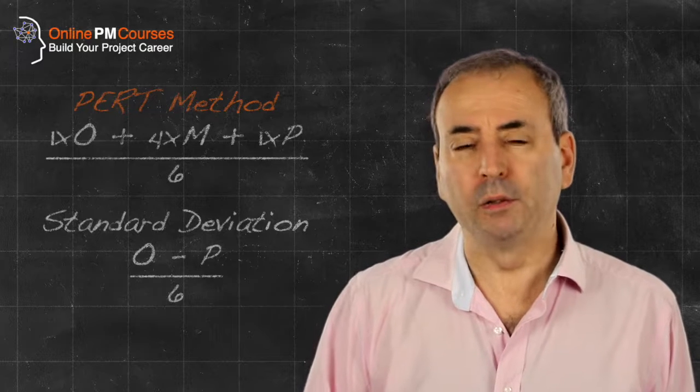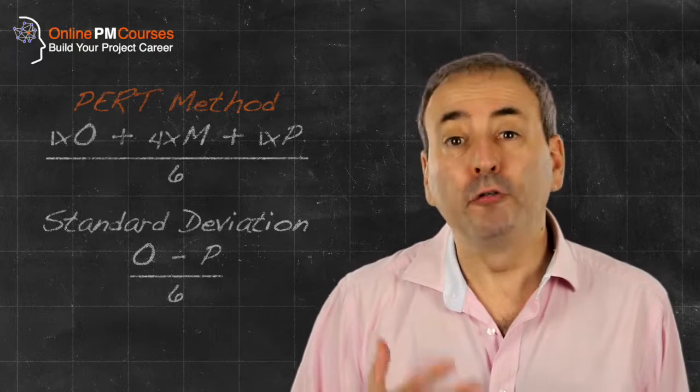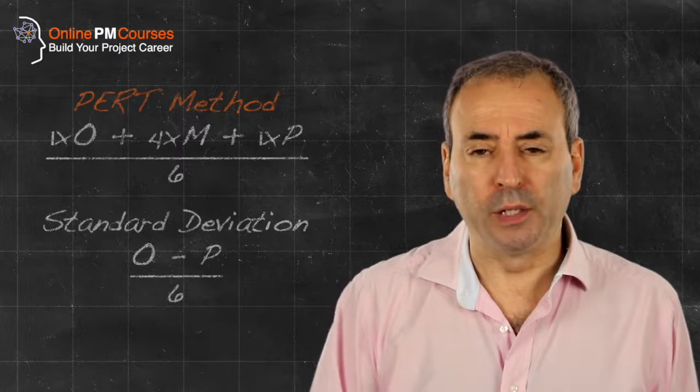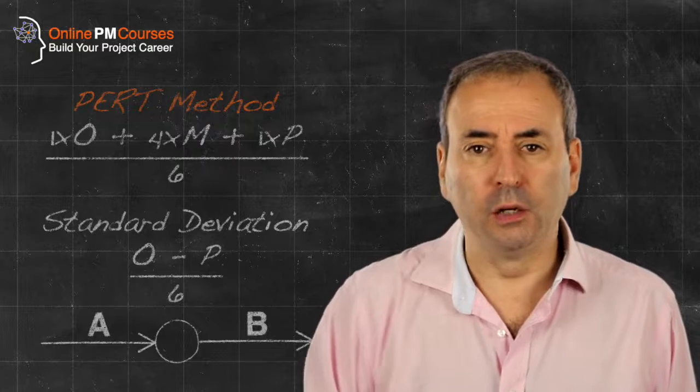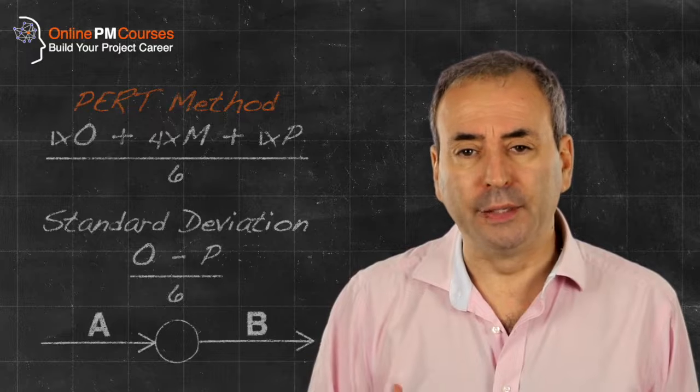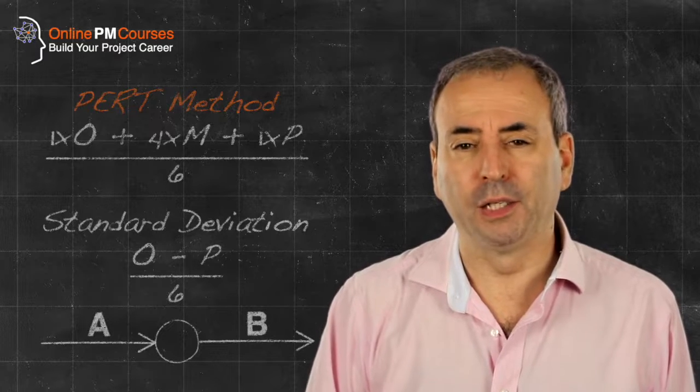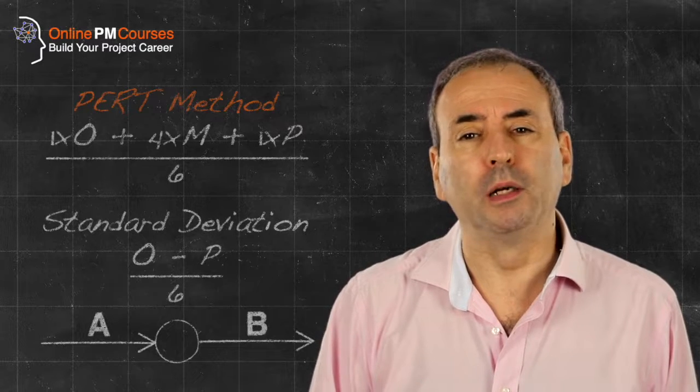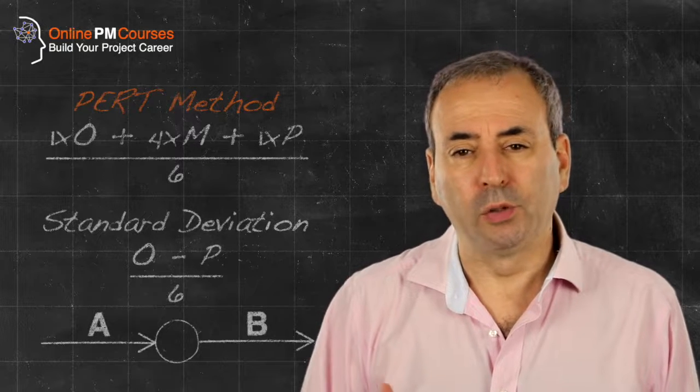So the PERT methodology is a way of estimating the duration of projects. Firstly, by building a network where the convention is that we use the arrows to define the tasks and the nodes show how the arrows relate to one another. And secondly, the lengths of those arrows, the durations recorded on those arrows, are based on three point estimates from which we can calculate average durations and standard deviations.